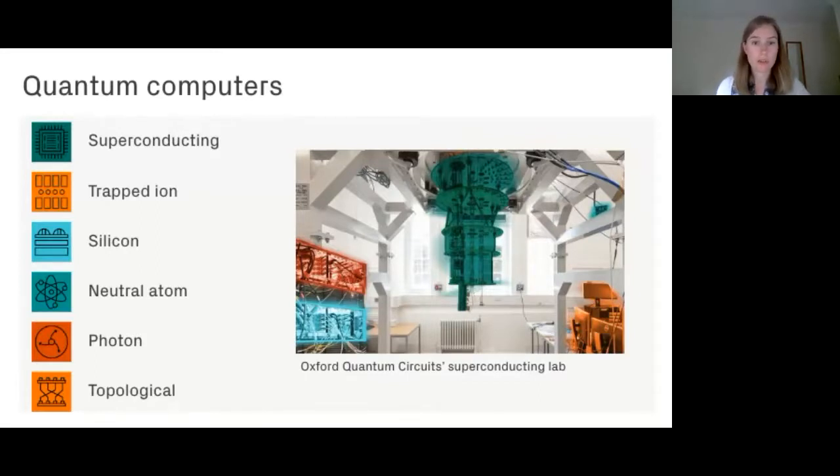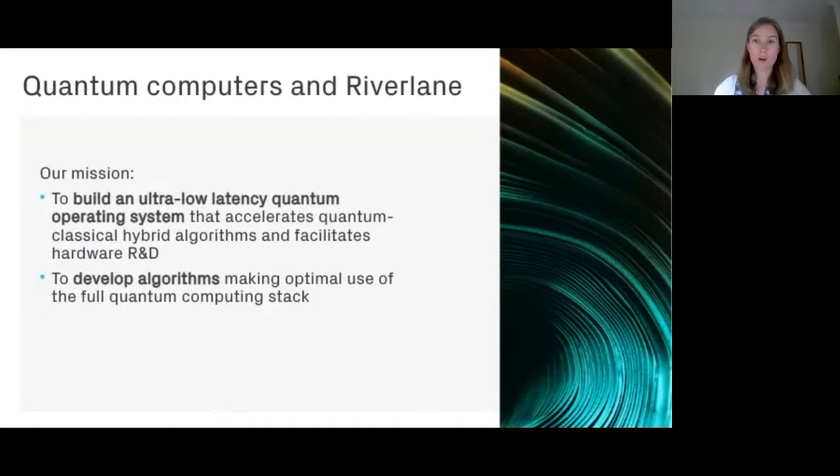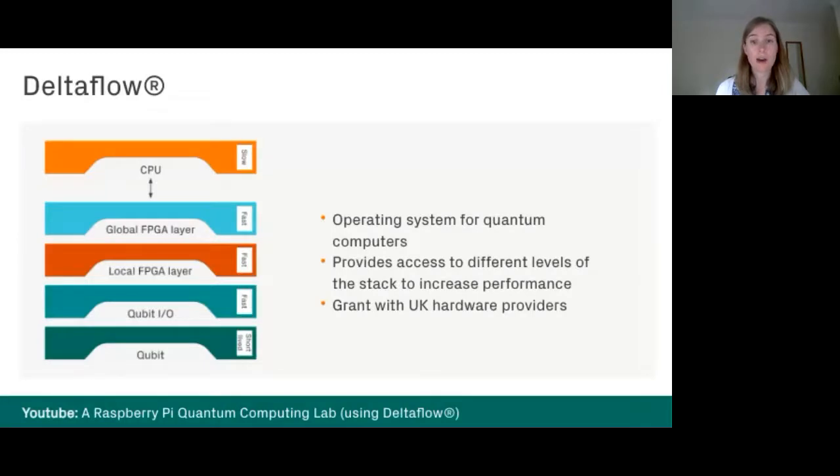And so that brings me to what Riverlane do. And we see our role in developing software for quantum computers to have two parts. So the first part of our mission is to build an operating system for a quantum computer. And the second part is to develop algorithms and think about applications for calculations that could be run on quantum computers.